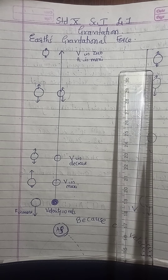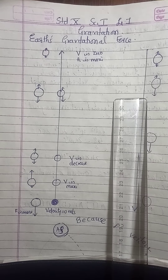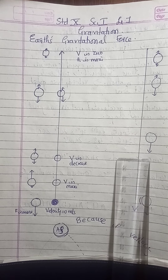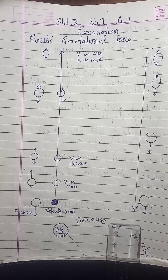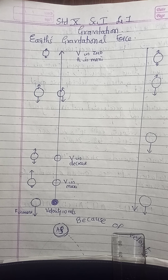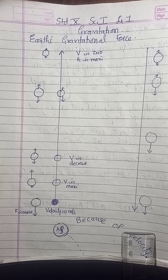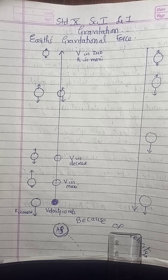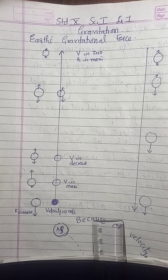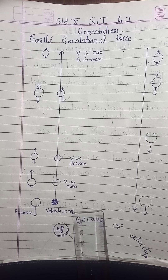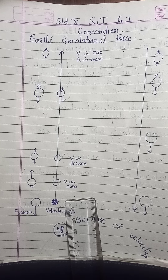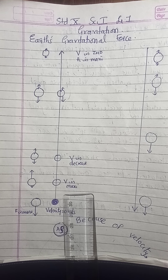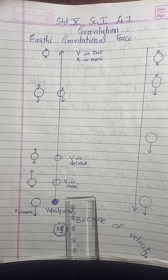Now the upward force is less and the downward force goes on increasing. Before it touches the ground, the downward force is maximum and the upward force is least. So we have seen that at every stage on this object, the force of gravity is acting.